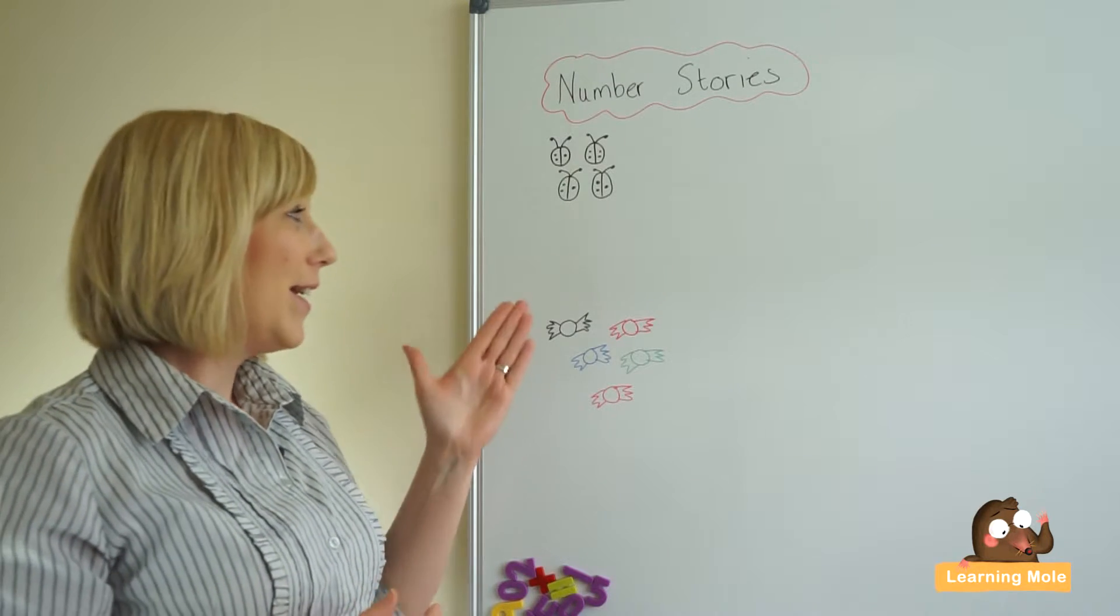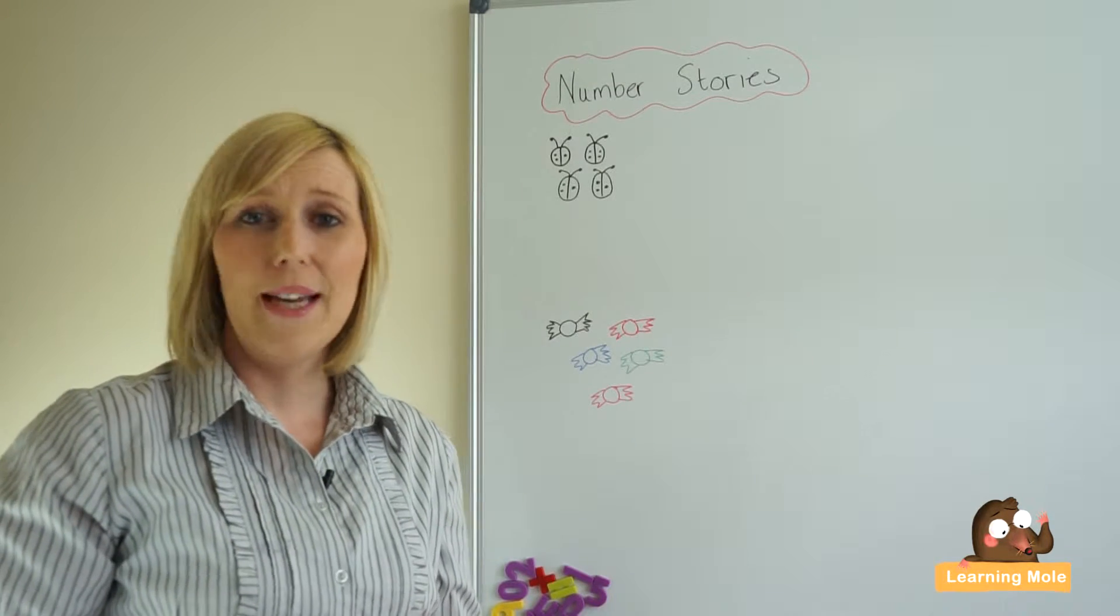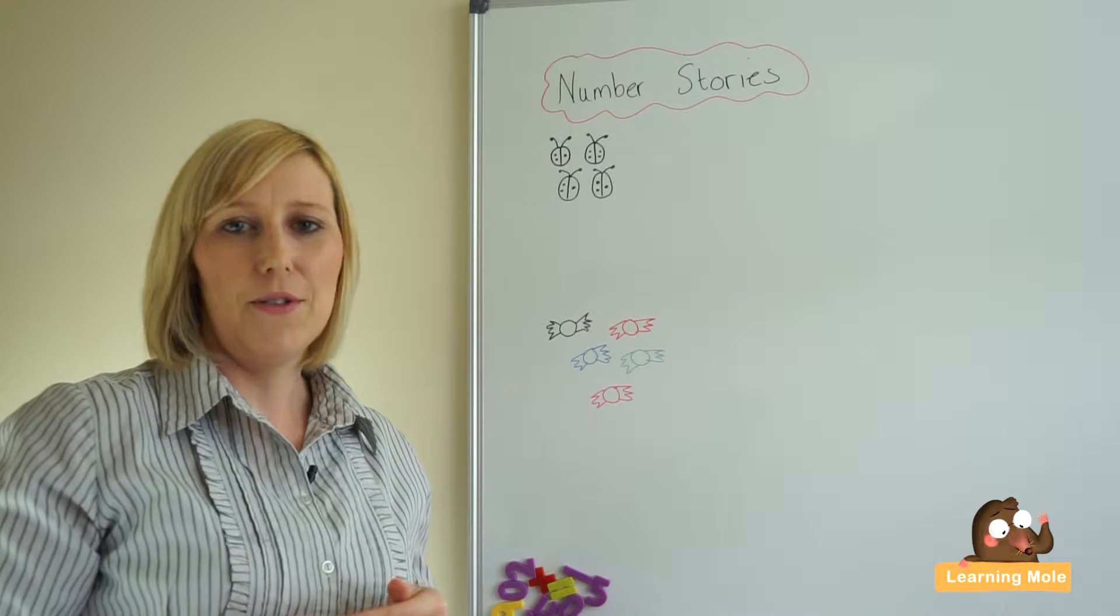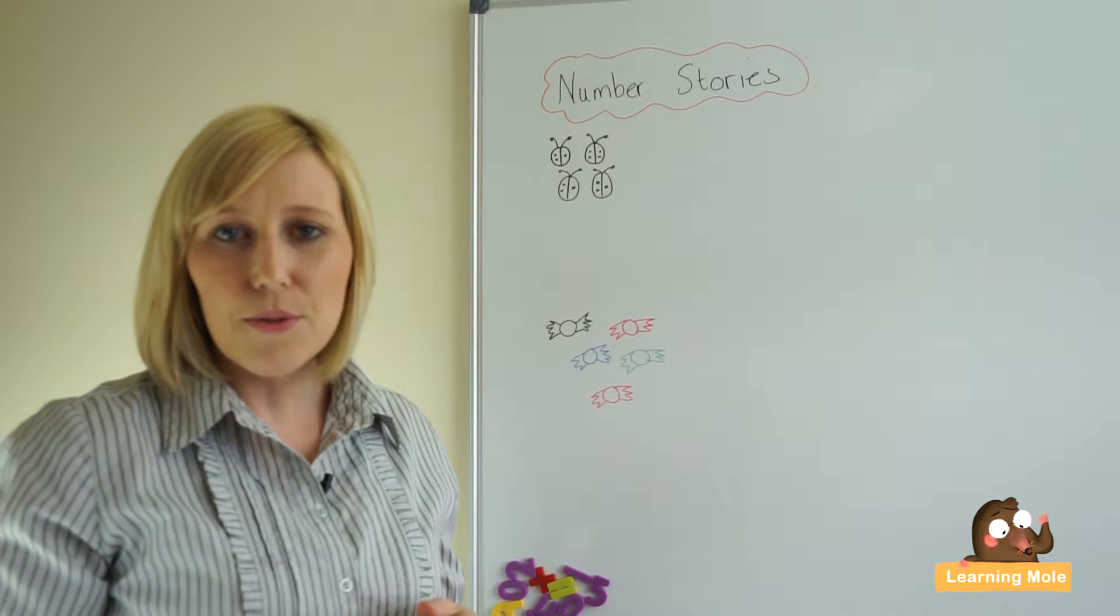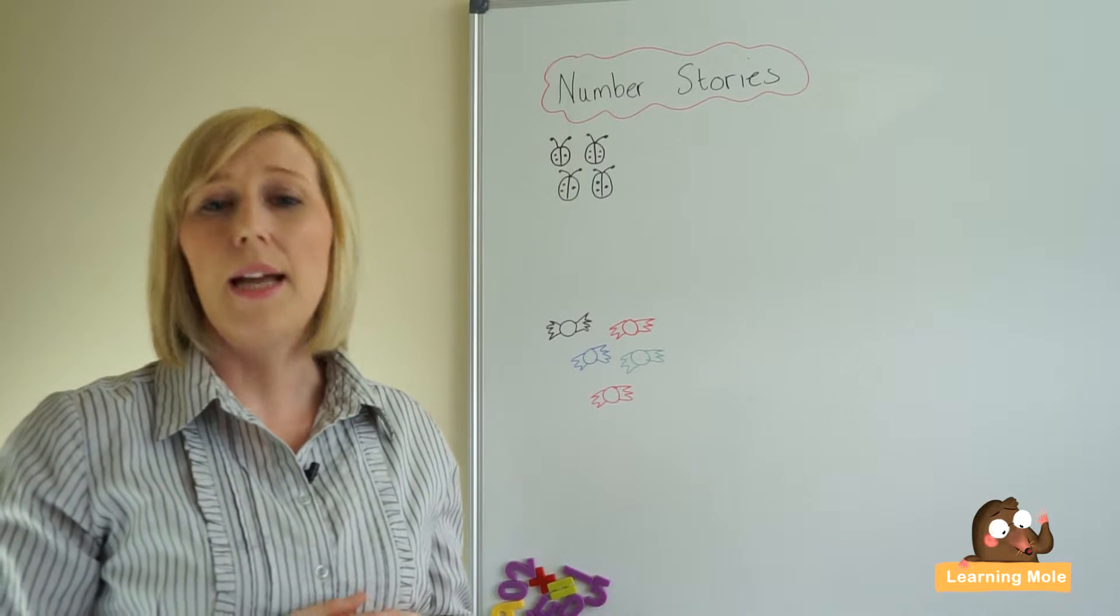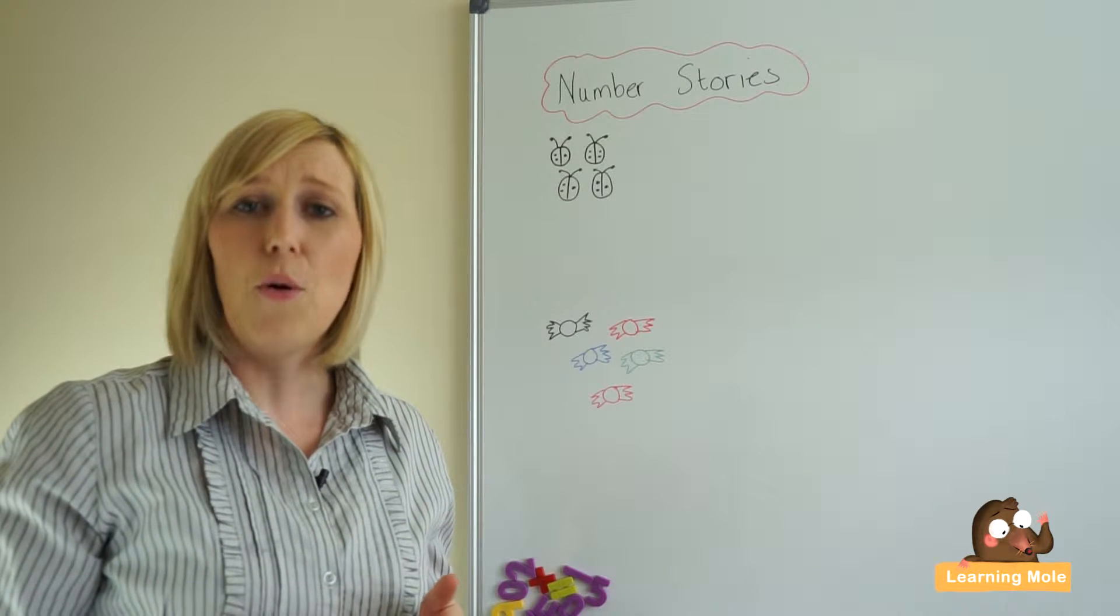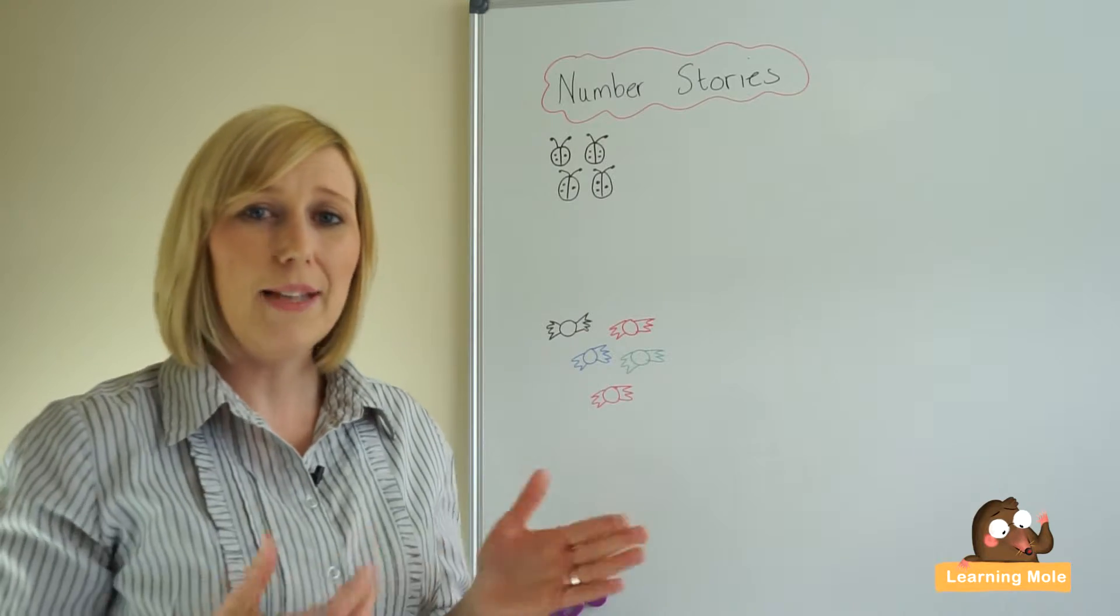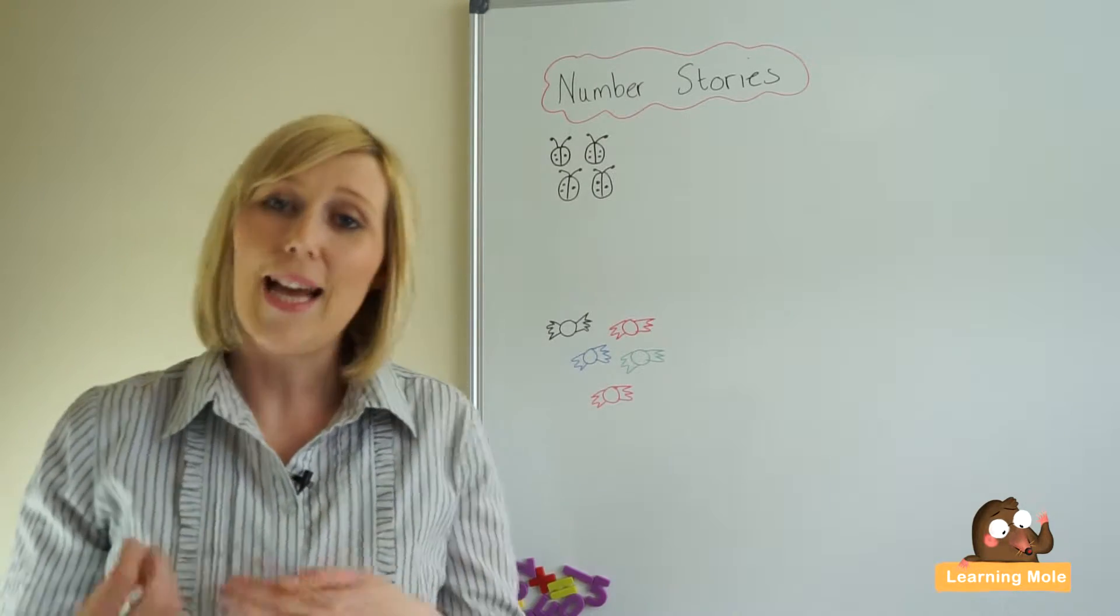Very simple. You make up a little story: there were six little ladybirds walking along the road, one more came along, how many ladybirds were there all together? And then hopefully your child will record that on the whiteboard. So let's do one together so that we can get that idea.